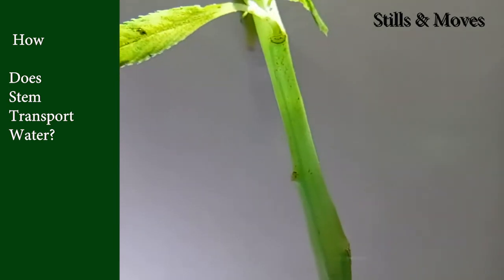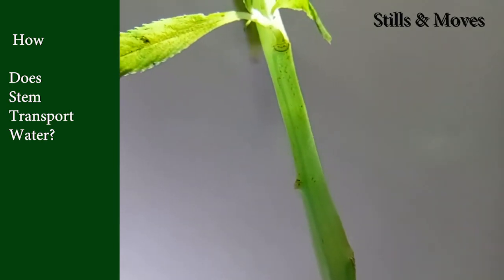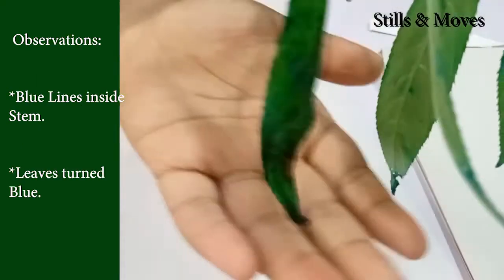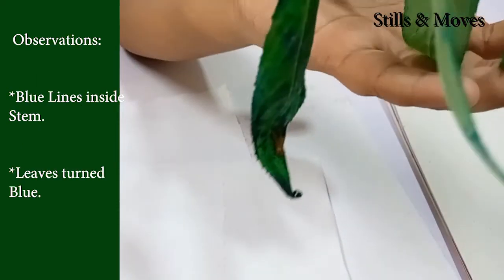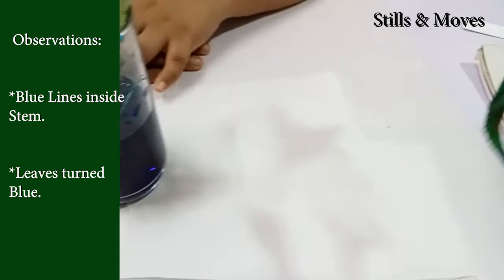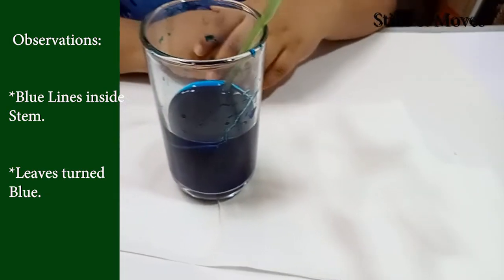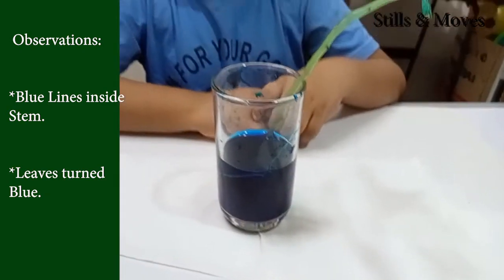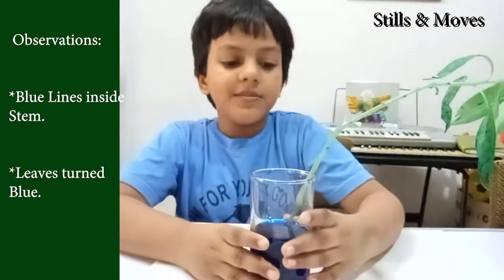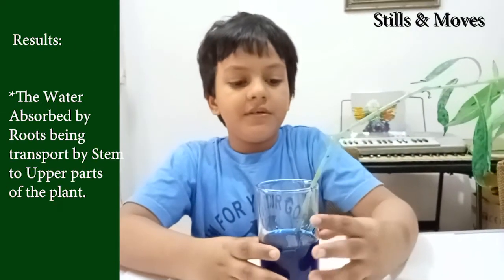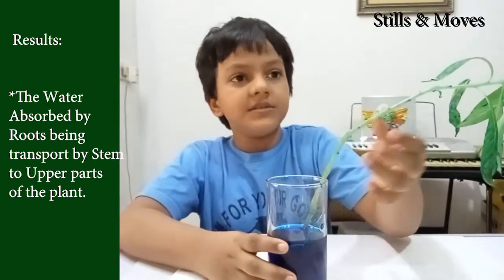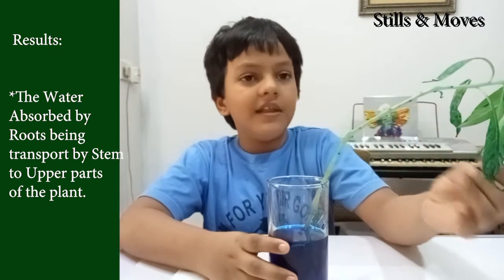That is the water coming from the glass. Those are the water-carrying tubes in the stem. You can see these leaves have turned blue. I did not color the leaves — I put the plant into blue water. The root absorbed the water and the stem transported it to the leaves.